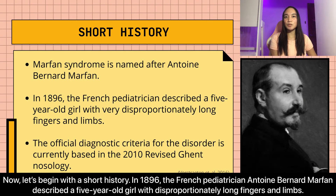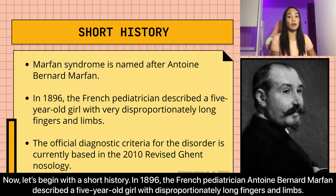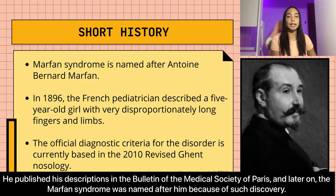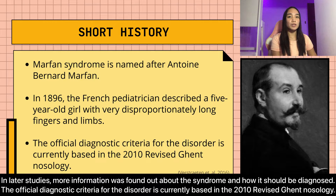Now let's begin with a short history. In 1896, the French pediatrician Antoine Bernard Marfan described a five-year-old girl with disproportionately long fingers and limbs. He published his descriptions in the Bulletin of Medical Society of Paris, and later on, Marfan Syndrome was named after him because of such discovery. In later studies, more information was found out about the syndrome and how it should be diagnosed. The official diagnostic criteria for the disorder is currently based on the 2010 Revised Ghent Nosology.